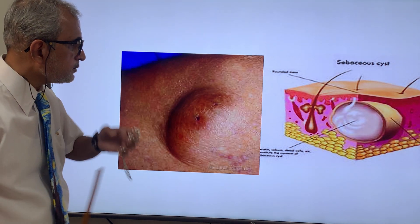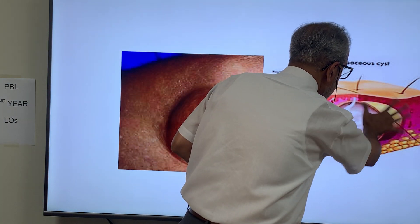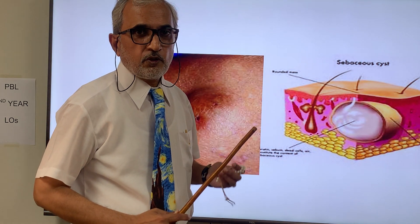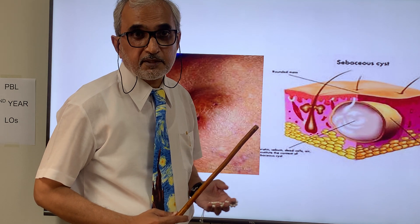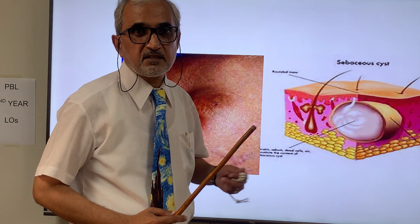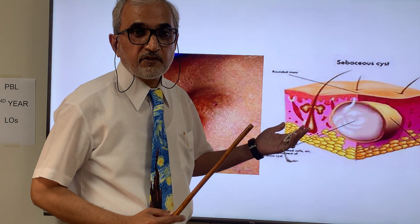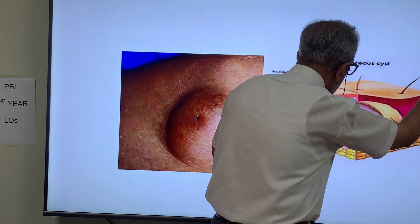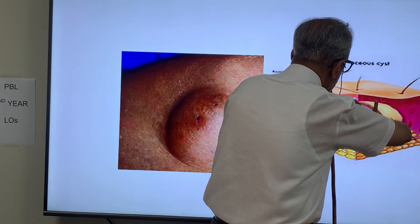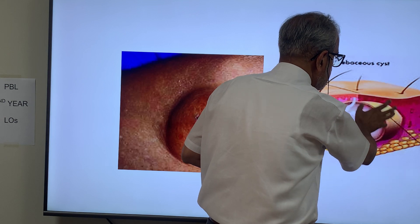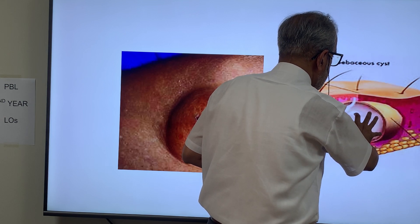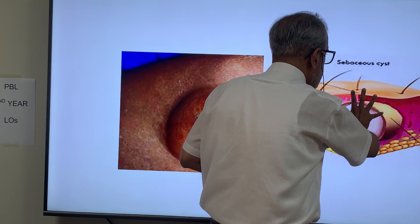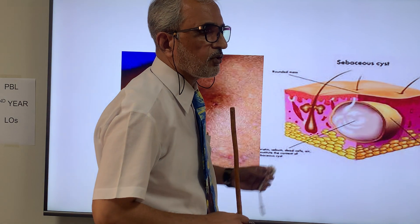Once it gets infected, there is inflammation around it, giving rise to the classical signs of inflammation: rubor, dolor, calor — redness, pain/tenderness, and increased temperature. As the infection progresses, the thick pus finds its way out, bursts open, and healing occurs by secondary intention. If granulation is very exuberant and the condition is neglected, it can result in the cock-peculiar tumor.